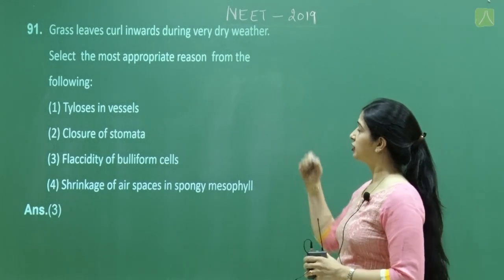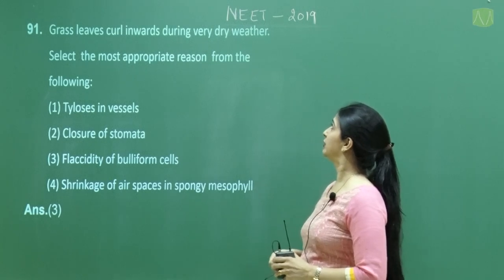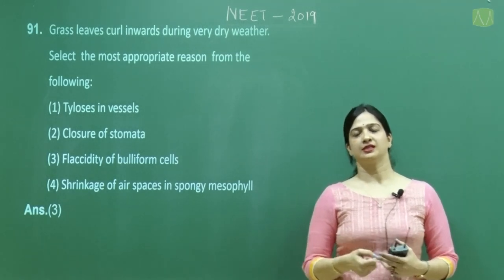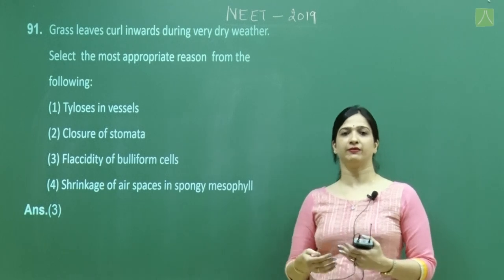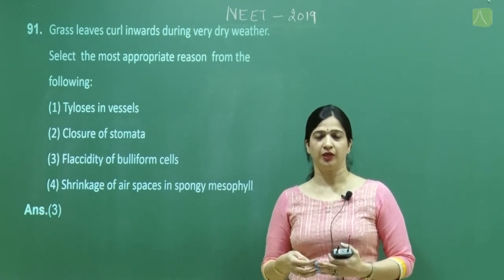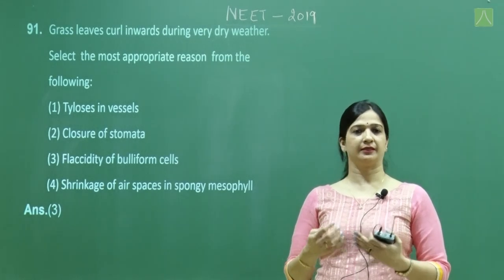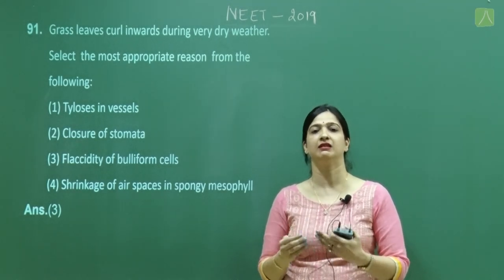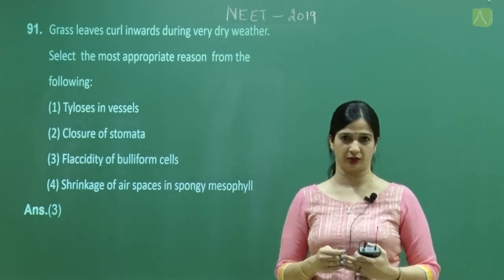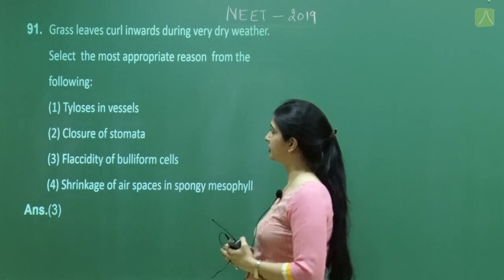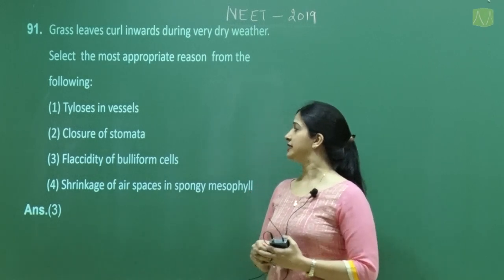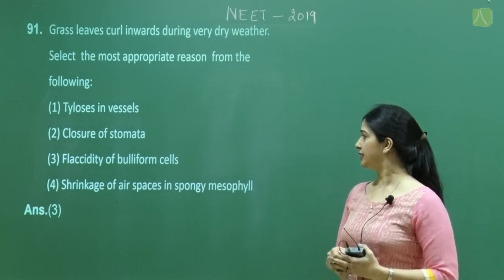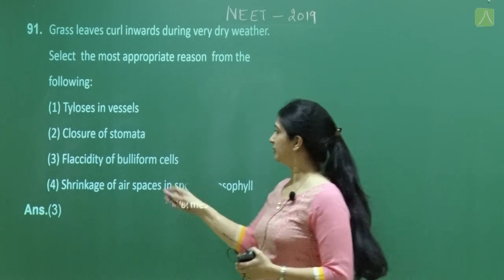Question number 91: Grass leaves curl inwards during very dry weather — select the most appropriate reason. In grasses, certain adaxial epidermal cells get modified; they become colorless, empty, and large. When sufficient water is available they become turgid, but under water stress they become flaccid and help in curling of the leaves to reduce water loss. The correct answer is option 3: flaccidity of the bulliform cells.